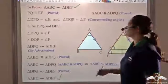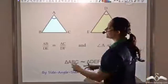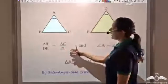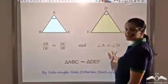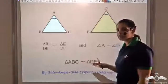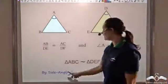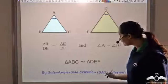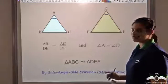Hence we have proved this theorem. We can now say: if the ratio of the corresponding sides is equal and the angle included between these sides is also equal, then the triangles are similar by the Side-Angle-Side criterion, denoted SAS. This angle must be the included angle between the corresponding proportional sides.